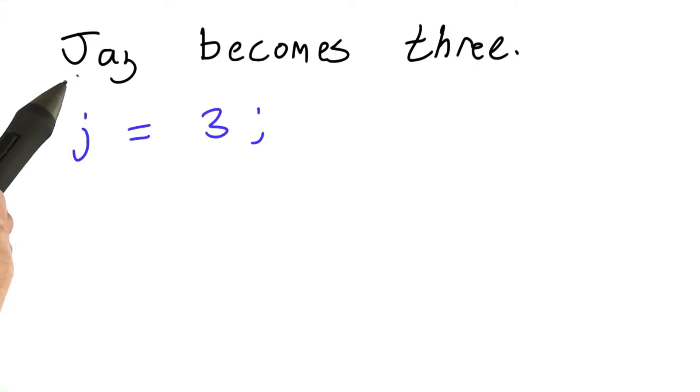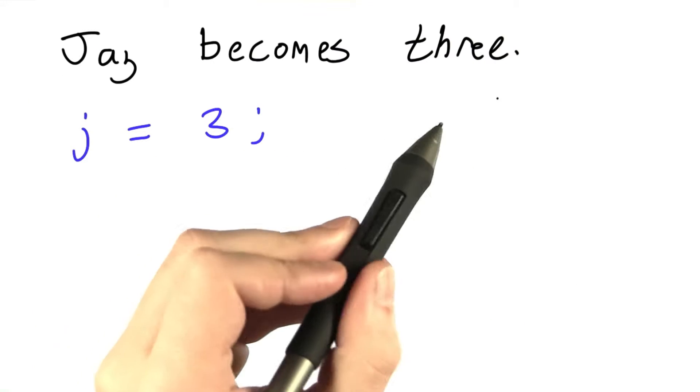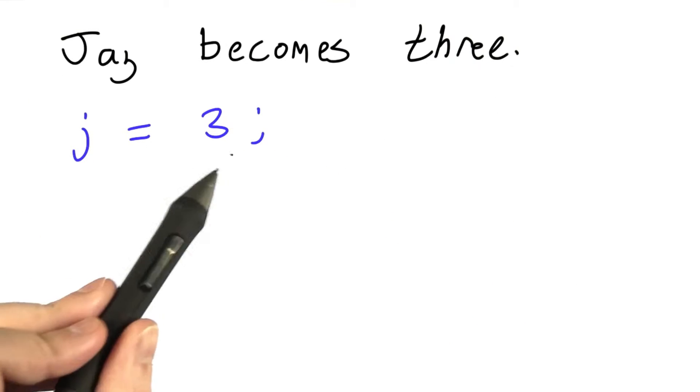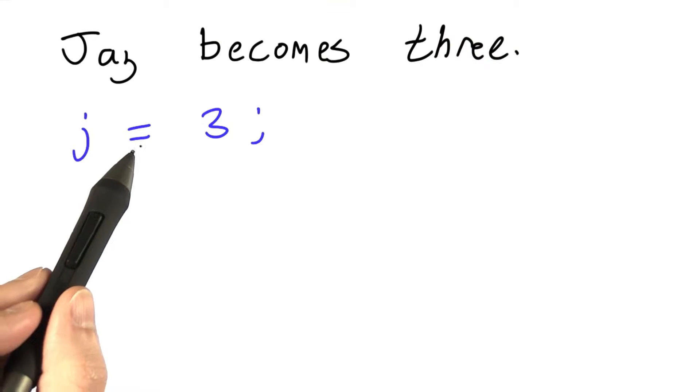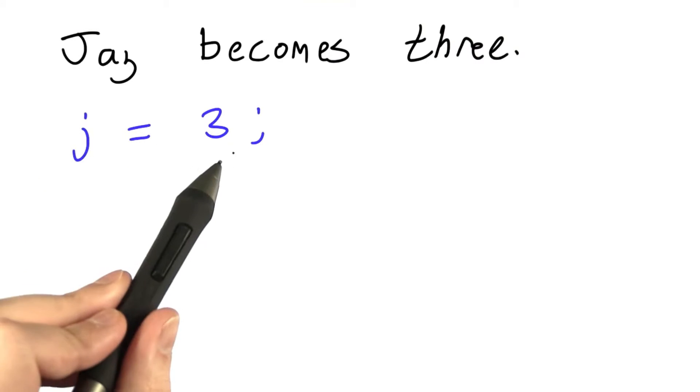So just as I might write the English sentence, j becomes 3, perhaps it's her birthday today, I can write the JavaScript assignment statement j becomes 3. j is assigned the value 3.